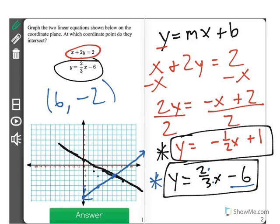Now I can see where my coordinate points intersect. They intersect at point 6, negative 2, which is actually a solution to this equation shown here.